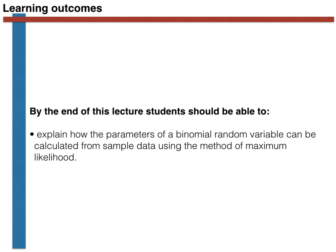This concludes the material that I wanted to discuss in this video. As I explained at the start, I wanted to explain how the parameters of a binomial random variable can be calculated from sample data by using the method of maximum likelihood. As we have seen in this video, this method works by maximizing the probability of observing the result from the experiment.